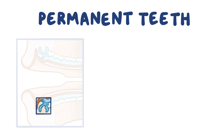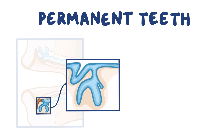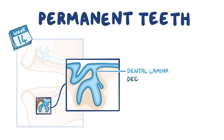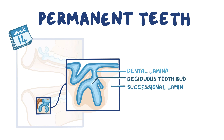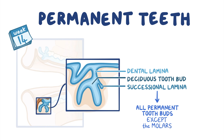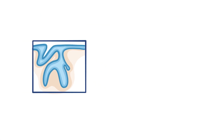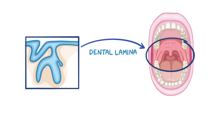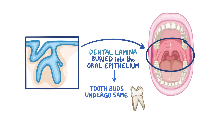Permanent teeth develop in a manner similar to deciduous teeth but begin at around week 14 of intrauterine life. The first step is the extension of a tiny bit of dental lamina just behind the deciduous tooth bud, called the successional lamina. The successional lamina gives rise to the tooth bud of all permanent teeth except the molars. The dental lamina in the posterior regions of the jaw buries into the oral epithelium and gives off tooth buds that undergo the same stages of development as the deciduous tooth bud.